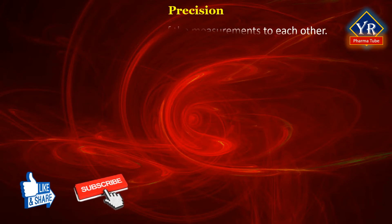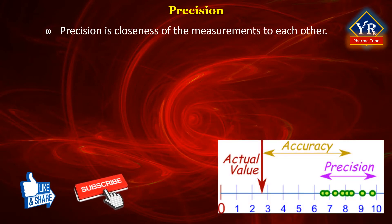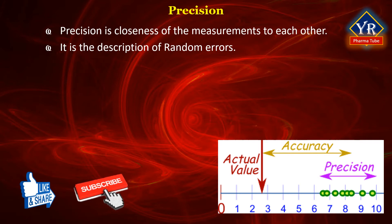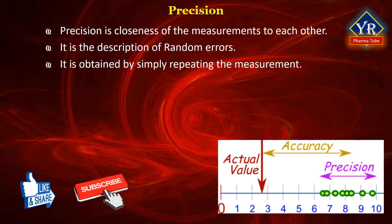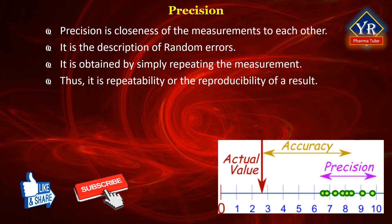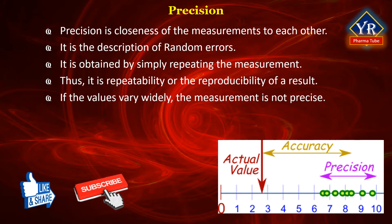Precision. In a set of analytical measurements, precision is the closeness of the measurements to each other. It is a description of random errors, which is a measure of statistical variability, and is generally obtained by simply repeating the measurement. The precision of an analytical procedure is the degree of agreement among individual results when the procedure is applied repeatedly to multiple samplings of the same homogeneous sample. Simply, precision is defined as the degree of agreement between replicate measurements of the same quantity — that is, the repeatability or reproducibility of a result. If you measure a quantity several times and the values agree closely with one another, your measurement is precise. If the values vary widely, your measurement is not precise.